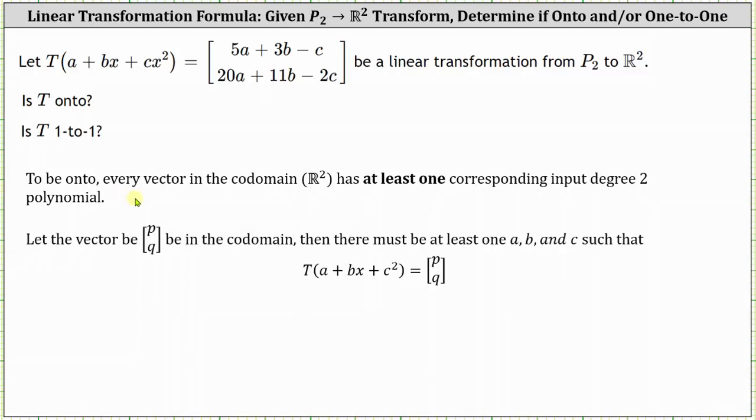To test for this, let the vector PQ be in the codomain. If the transformation is onto, there must be at least one A, B, and C such that T of A plus BX plus C squared equals the vector PQ.